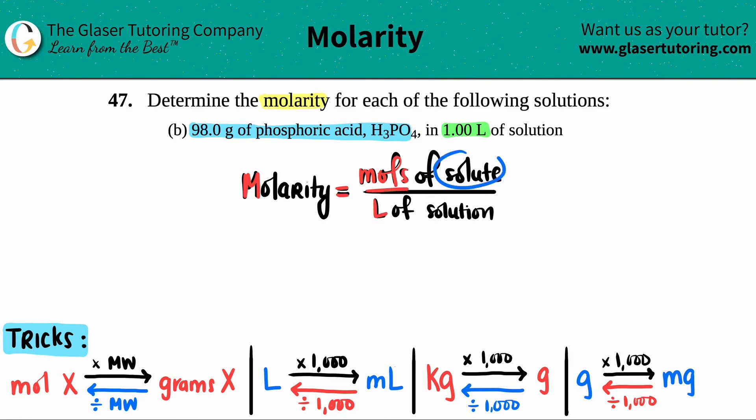So here I have M = moles divided by liters. If I'm solving for molarity, I should know both of these numbers. They gave us 98.0 grams—grams is not the same as moles—but they did give us the liters. I know the bottom number is already 1.00 liter, but I need to find out the moles.